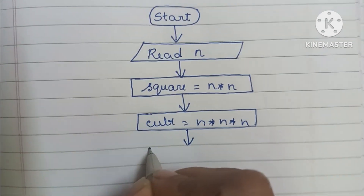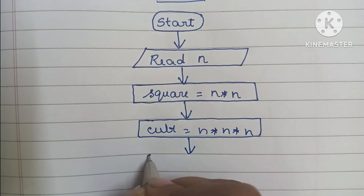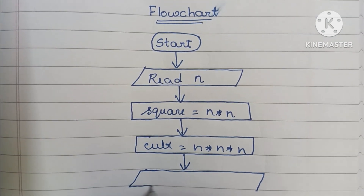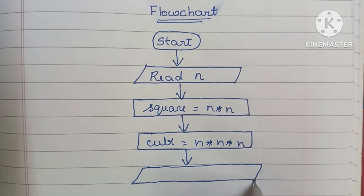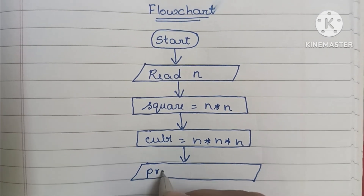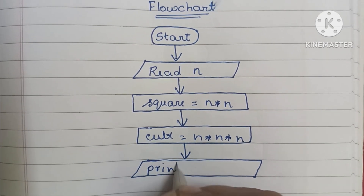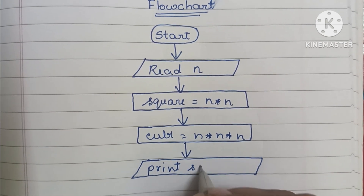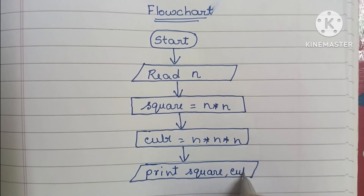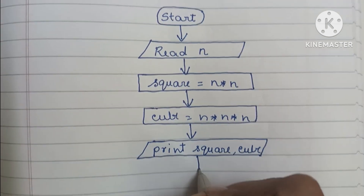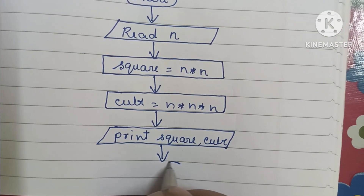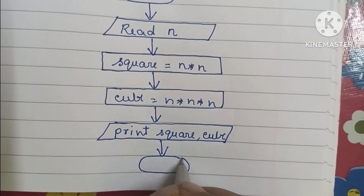Next, we have to print the output values. Output values are written within a parallelogram shape, so we have to draw a parallelogram shape. Within that, we have to print square, cube. Next, we have to stop the flowchart using the stop statement.